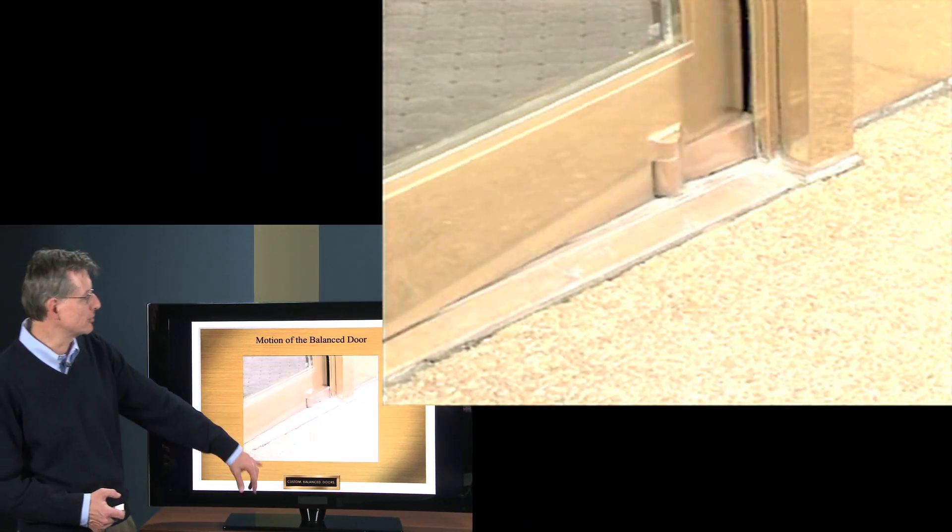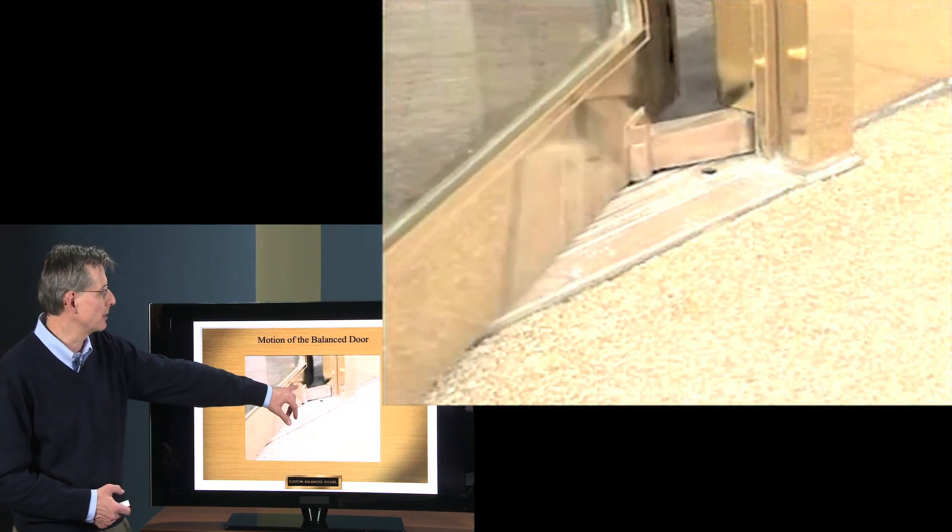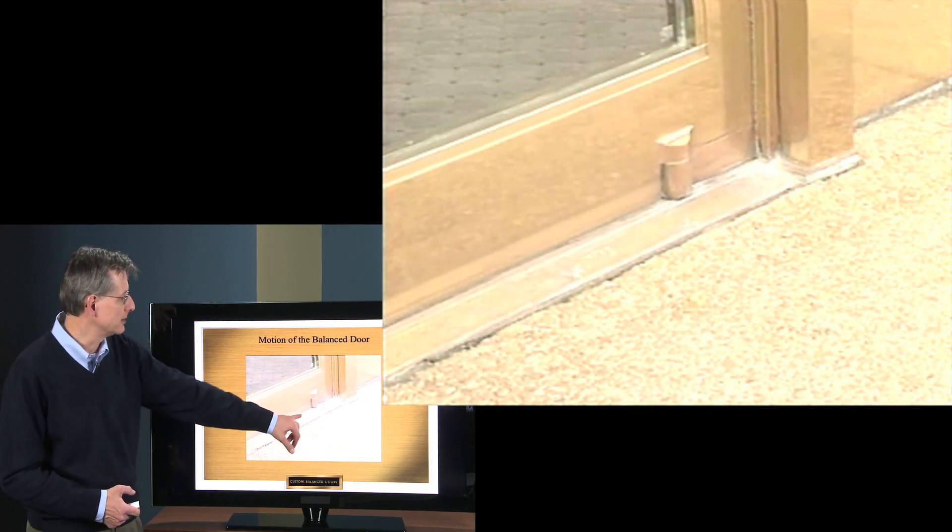Now we're going to next see the bottom of the door, bottom arm being thicker because it's carrying the weight of the door. Bottom pivot, again there's no guide down at the bottom of the door.